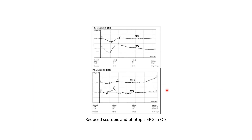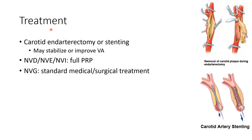ERG when done in a case of ocular ischemic syndrome will show reduced scotopic and photopic response. Coming to the treatment of ocular ischemic syndrome, carotid endarterectomy or stenting can be done. This may stabilize or improve visual acuity. For neovascularization of disc, neovascularization elsewhere, and neovascularization of iris, we have to do full panretinal photocoagulation. For neovascular glaucoma, we have to do standard medical or surgical treatment.